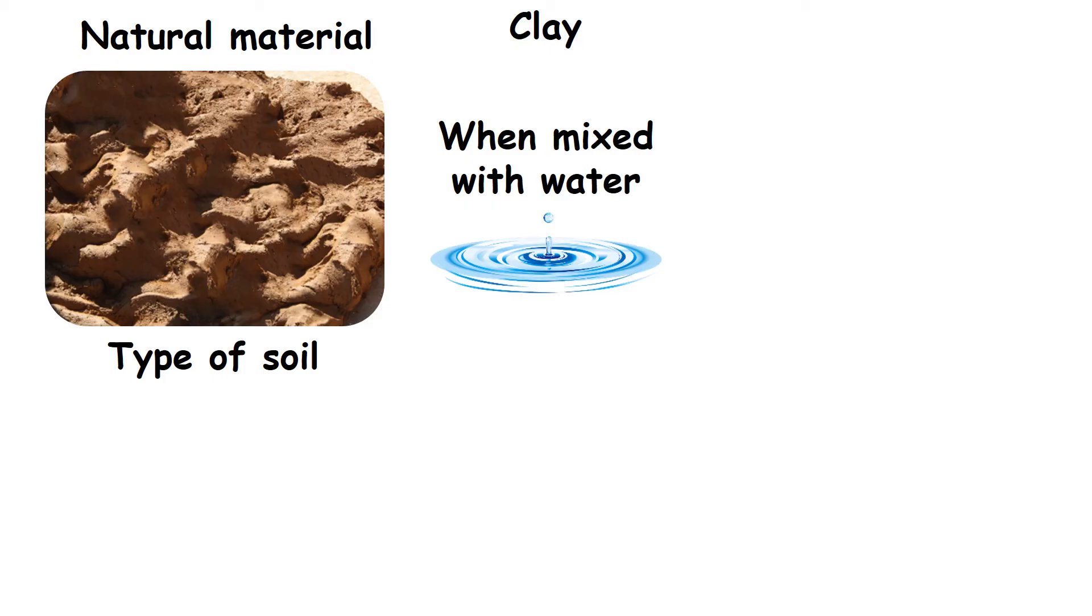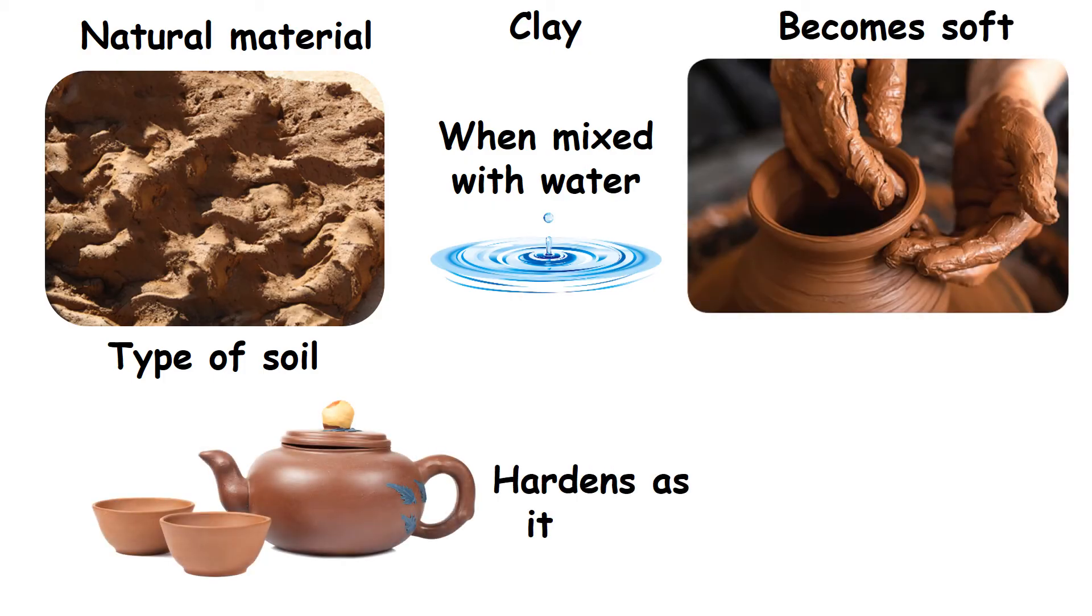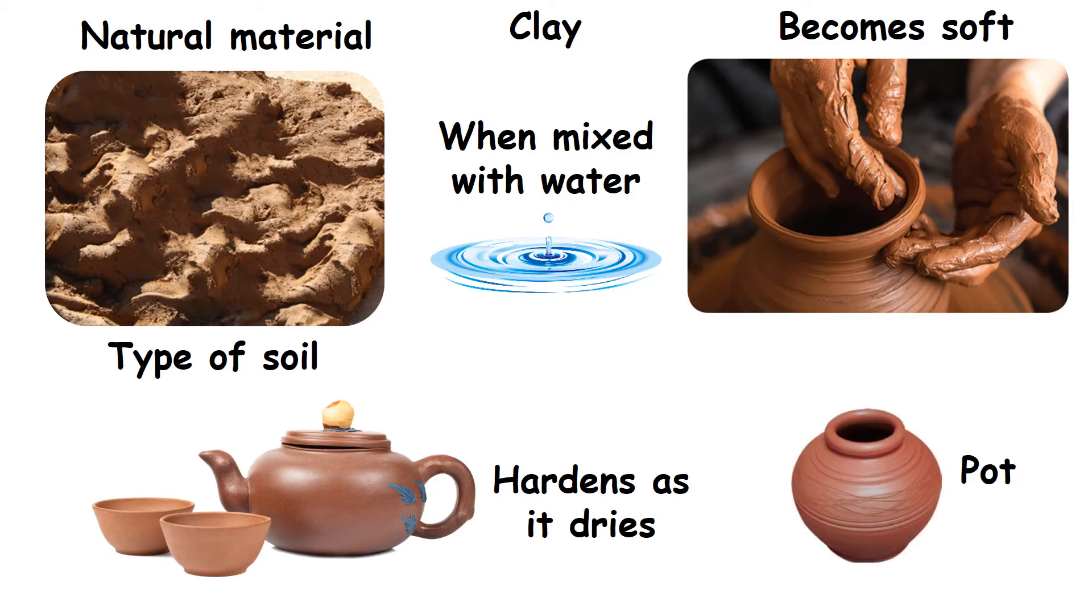Clay. Clay is a natural material. It is a type of soil. When it is mixed with water, it becomes soft. It hardens as it dries. So, pots and other things can be made from it.